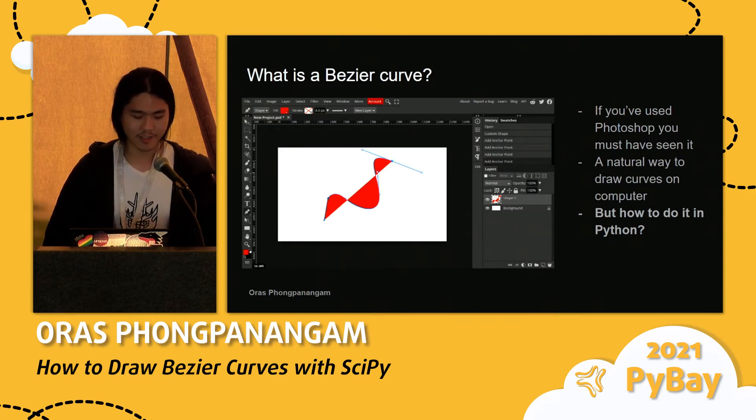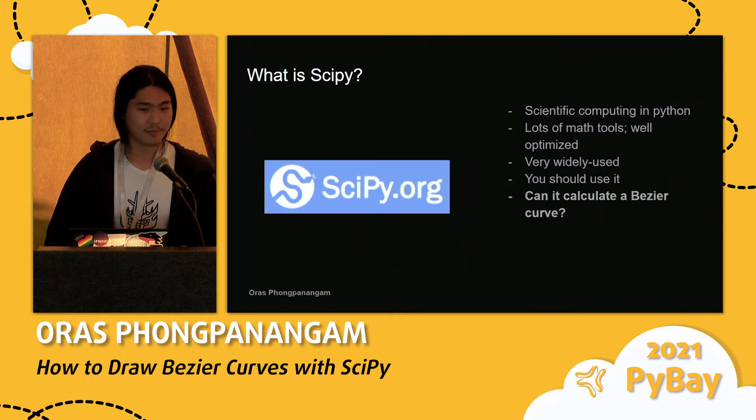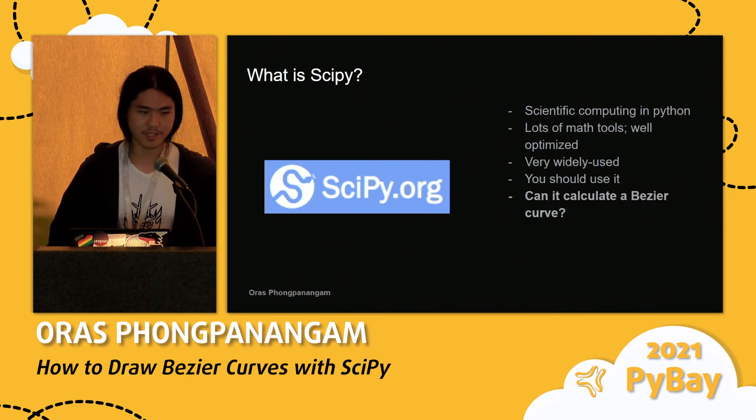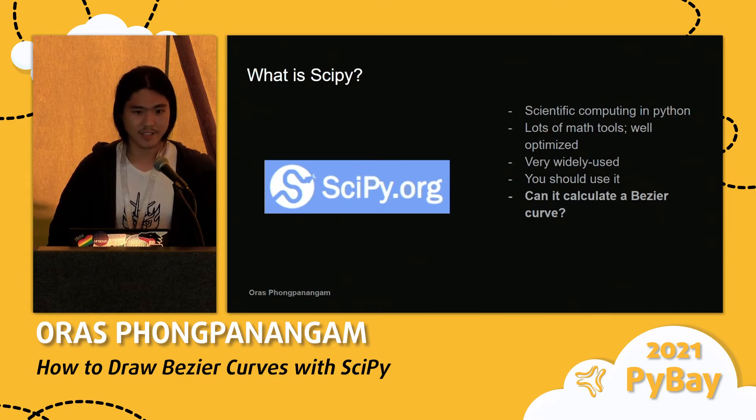And so there are many dedicated packages to do Bezier curves, but today I want to talk about how you would do it using SciPy. So SciPy is a scientific computing tool in Python. It has been around for a while. It is very widely used, and you definitely should use it if you have a chance. And yeah, so the problem is how do we use it to calculate Bezier curves?